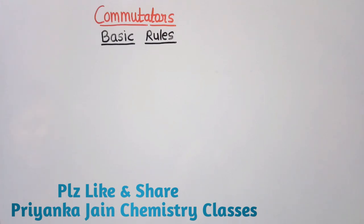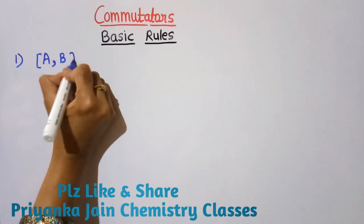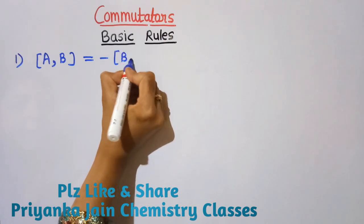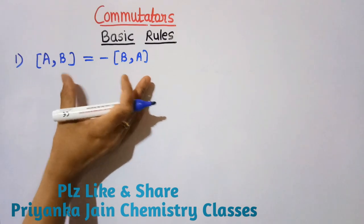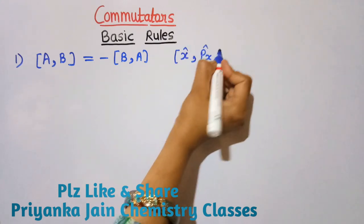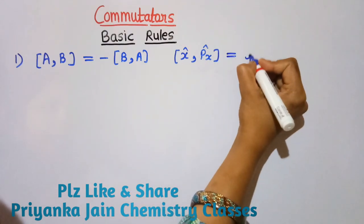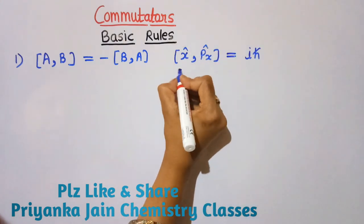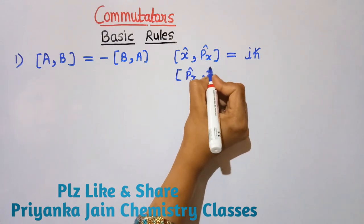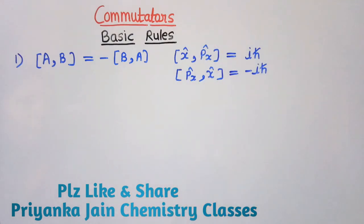Now let's see some basic rules and tricks for commutators, because without these tricks the questions become very lengthy. Rule 1: if we have [A, B], it equals −[B, A]. For example, since [x, px] = iℏ, the commutator [px, x] = −iℏ. Very simple — no need to re-solve it.